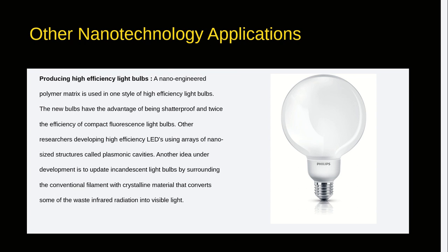Other nanotechnology applications. Producing high-efficiency light bulbs: a nano-engineered polymer matrix is used in one style of high-efficiency light bulbs. The new bulbs have the advantage of being shatterproof and twice the efficiency of compact fluorescent light bulbs. Other researchers are developing high-efficiency light bulbs using arrays of nano-sized structures called plasmonic cavities. Another idea under development is to update incandescent light bulbs by surrounding the conventional filament with crystalline materials that convert some of the waste infrared radiation into visible light.